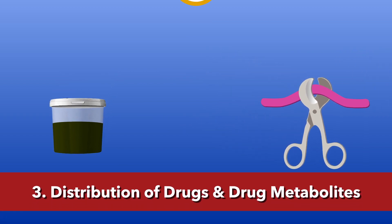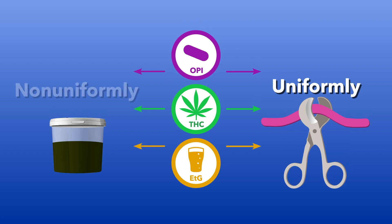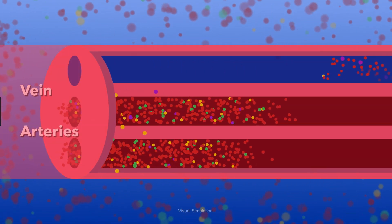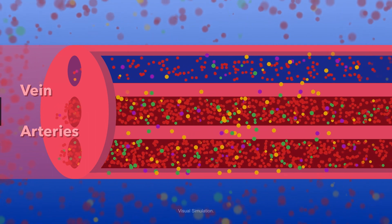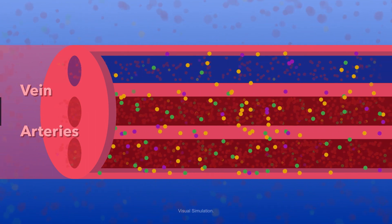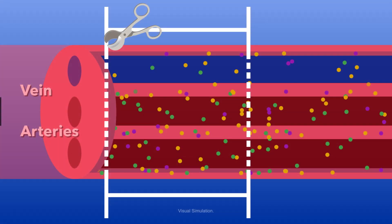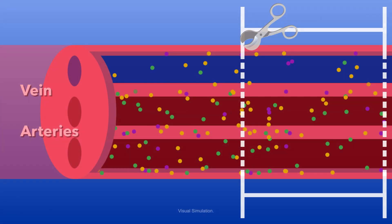Distribution of drugs and drug metabolites. By nature of the specimen, drugs and drug metabolites are incorporated into umbilical cord tissue and meconium differently. During gestational exposure, drugs and drug metabolites are distributed uniformly throughout the length of the umbilical cord tissue. This means the full detection window and history is captured in any given segment of umbilical cord upon collection, making it a specimen collected at the time of birth with one collector, saving valuable time and resources.